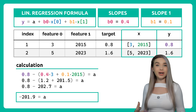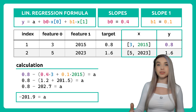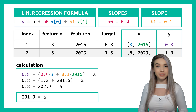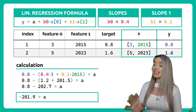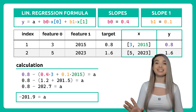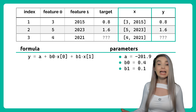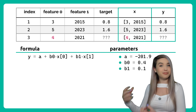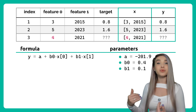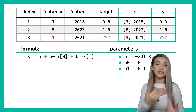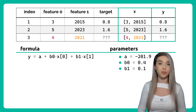Now, once we know the slopes and the y-intercept, we can easily calculate the value of a different house — let's say one with four rooms that was built in year 2021.